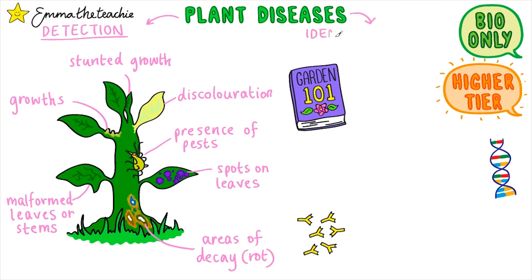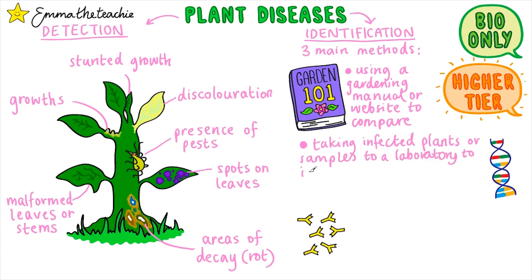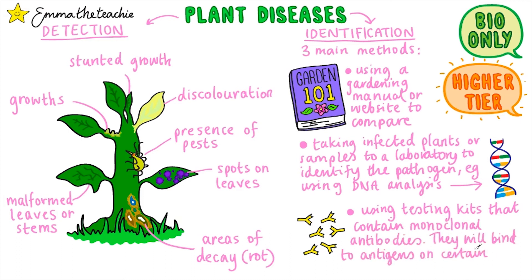Once you've spotted an indicator of a disease, the next step is to identify which disease is causing it. This can be tricky as many plant diseases have overlapping symptoms. There are three main ways to identify a disease. First, using a gardening manual or website to compare the diseased plant with descriptions and pictures. Secondly, taking infected plants or samples to a laboratory to identify pathogens using microscopy or DNA analysis — this may be done for crop plants or forests when the disease affects many plants. Finally, we can use testing kits that contain monoclonal antibodies, which will bind to antigens on certain pathogens if they are present. Once the disease has been identified, appropriate action to treat or contain it can happen.